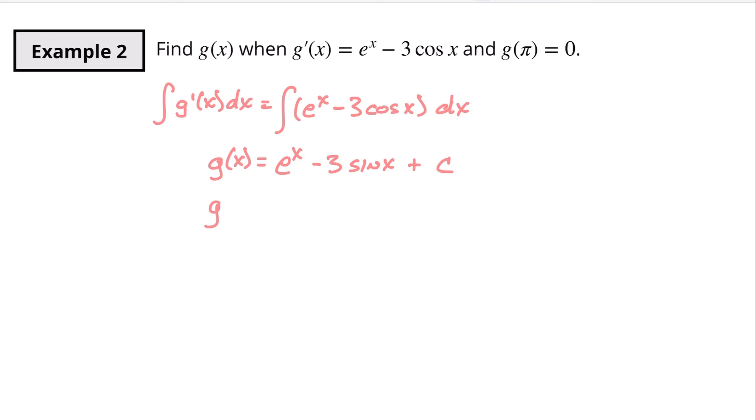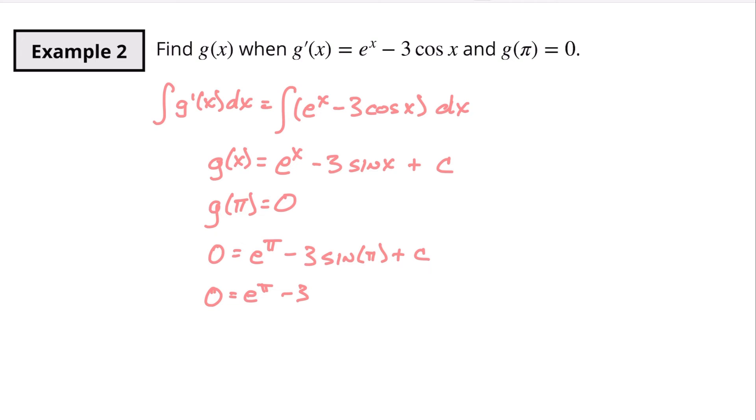Now we said up above that g of pi is equal to zero. So that means that zero equals e to the pi minus three sine of pi plus c. Alright. So zero equals e to the pi minus three. Now let's see sine. Sine is going this way. Here's going to be like the same as 180 degrees. That's pi. Sine is always our y value. So if we're over here that's going to be zero. So sine of pi is going to be zero plus c.